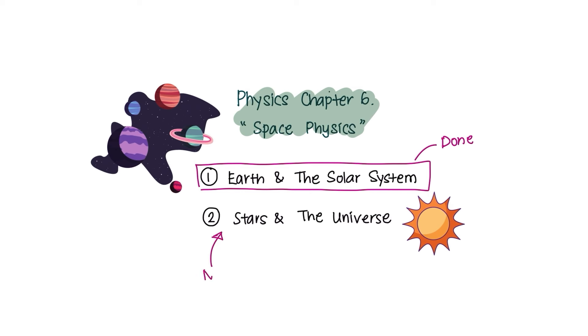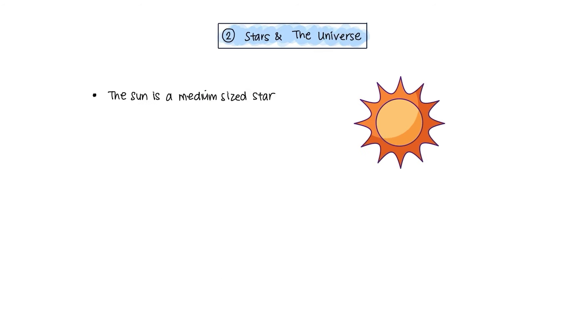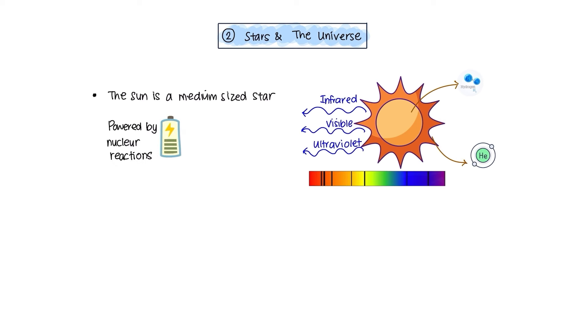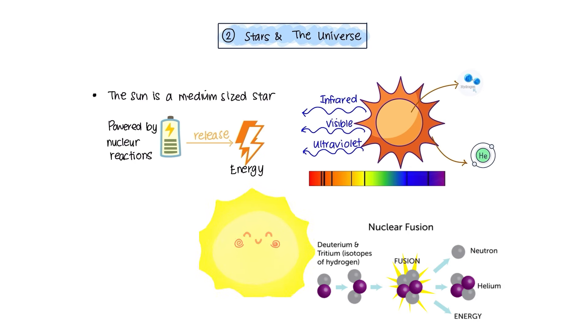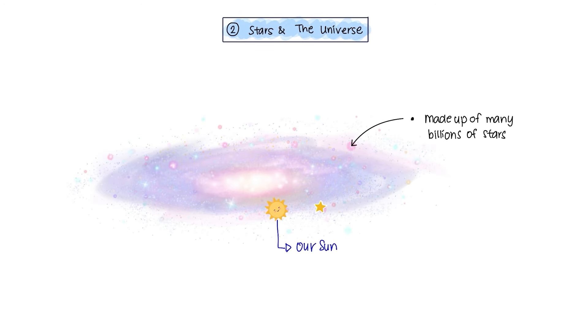Let's dive into the second subtopic of this chapter, Stars and the Universe. The Sun is a medium-sized star consisting of mainly hydrogen and helium. It radiates most of its energy in the infrared, visible, and ultraviolet regions of the electromagnetic spectrum. Stars are powered by nuclear reactions that release energy. And in stable stars like our Sun, the nuclear reactions involve diffusions of hydrogen into helium.